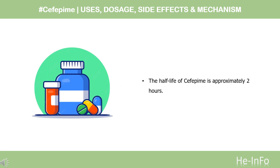Half-Life. Healthy adult male volunteers (n=9) given Cefepime had an average half-life of 2 hours. In patients requiring hemodialysis, the average half-life was 13.5 hours, and in patients requiring continuous peritoneal dialysis, the average half-life was 19 hours.